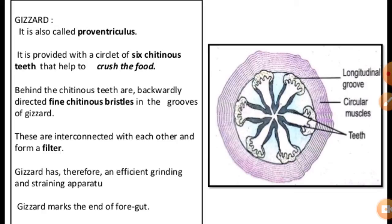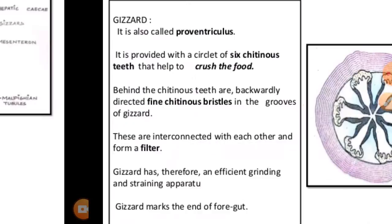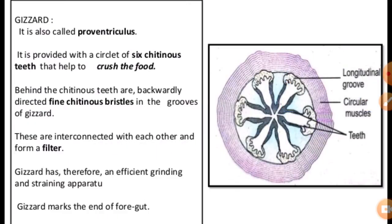The gizzard marks the end of the foregut. The whole foregut is lined by the cuticle protecting the alimentary canal from rough food particles. The posterior end projects as a narrow form into the midgut, called the stomodaeal valve. The foregut is lined with cuticle.